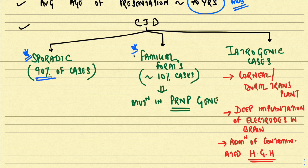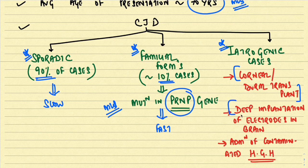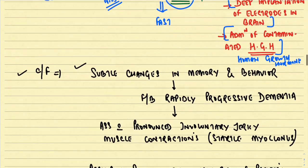CJD has three important forms: sporadic, accounting for 90% of cases; familial, accounting for 8–10% and caused by mutation in the PRNP gene (these cases progress very fast); and a small number of iatrogenic cases due to corneal or dural transplants, deep implantation of electrodes, or administration of contaminated human growth hormone.